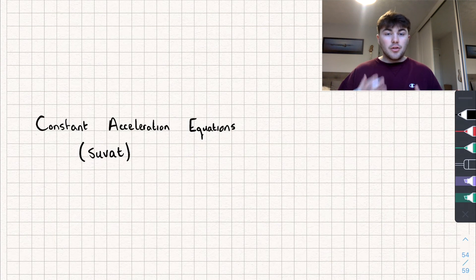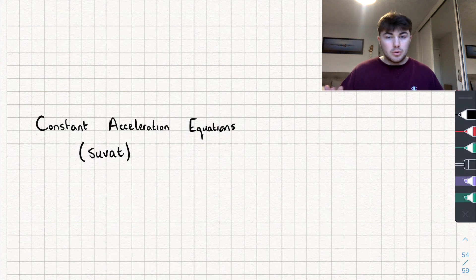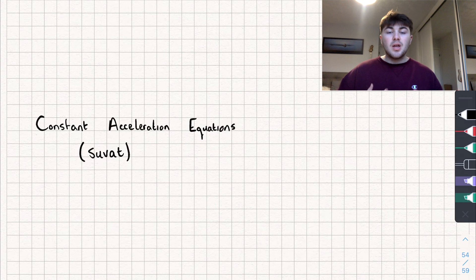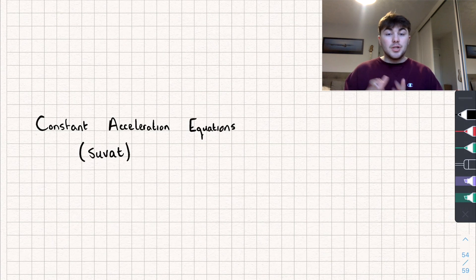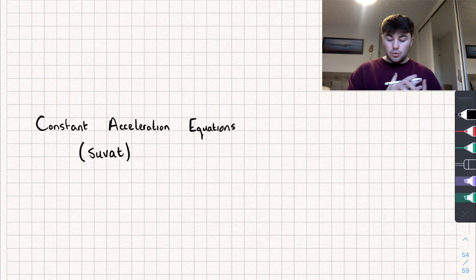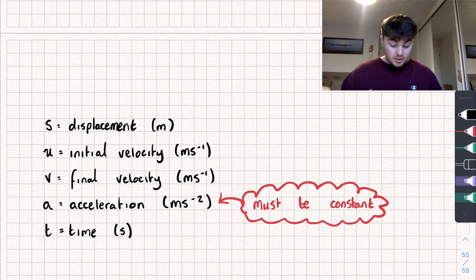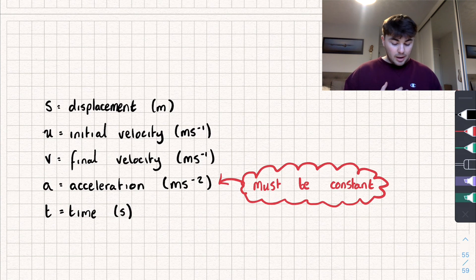Hello, in this video we're going to be taking a look at the constant acceleration equations, which are normally called SUVATs. We're going to be talking about what SUVAT stands for, the equations you can get from them, and then I'll be answering some exam questions. I'll timestamp each part of the video so if you want to skip to the exam questions or any part, you can do that. Let's start with what SUVAT stands for.